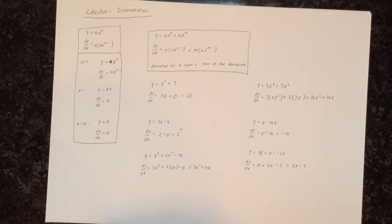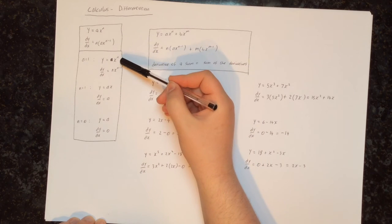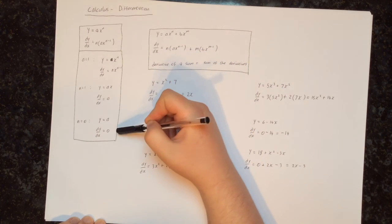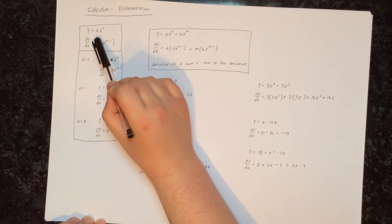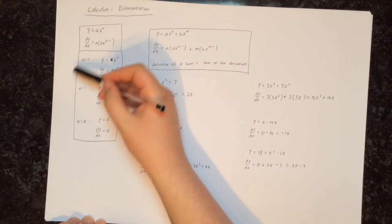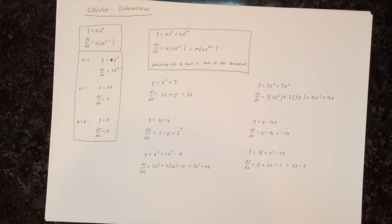So what we've done in this video is we've learned how to differentiate several terms added together, using all of the things we've learned from the previous videos and applying them one at a time. In all cases, all we're doing is using the main formula and applying it to each term individually. The special cases allow us to do it faster, but if you can't remember them you can always use the main formula. In the next video we'll be using some different notation but doing essentially the same thing.